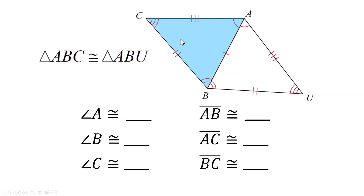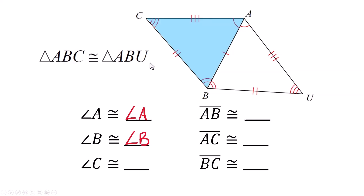Let's try it again. First, make sure you see there are two triangles here. Triangle ABC is congruent to triangle ABU. Angle A right up here is congruent to angle A — A is in the same spot in both, because they're sharing this vertex. Angle B — they're sharing that one too, and B is in the second spot for both. C and U go together — they're in the same position in the congruency statement, and you can check in the diagram: they're both marked with three little arcs.